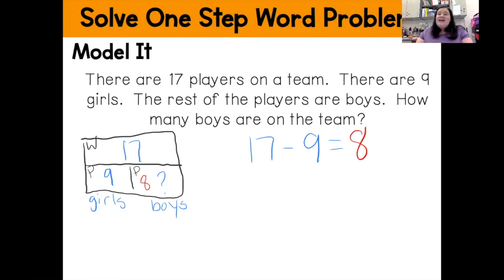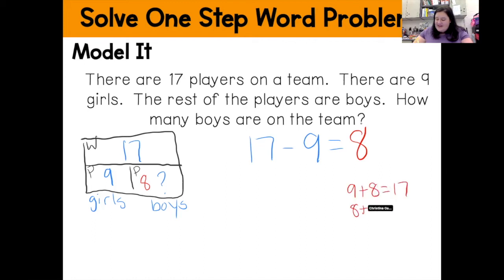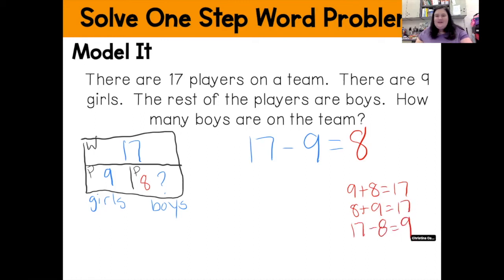I can fill in the rest of my fact family: nine plus eight equals 17, eight plus nine equals 17, and 17 minus eight equals nine. That's the complete fact family — and that would be using the model it strategy.